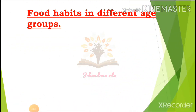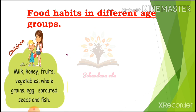Food habits in different age groups. Children mostly eat milk, honey, fruits, vegetables, whole grains, eggs, powdered seeds, and fish. These are the foods that children need.